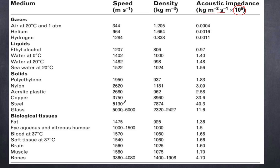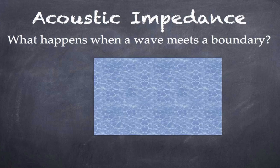We get an amplification effect here. Because the density value is getting bigger and the velocity value is getting bigger, acoustic impedance values are getting bigger as well.